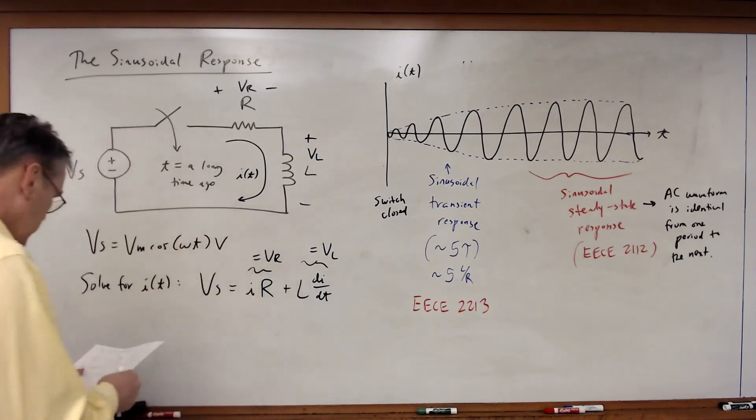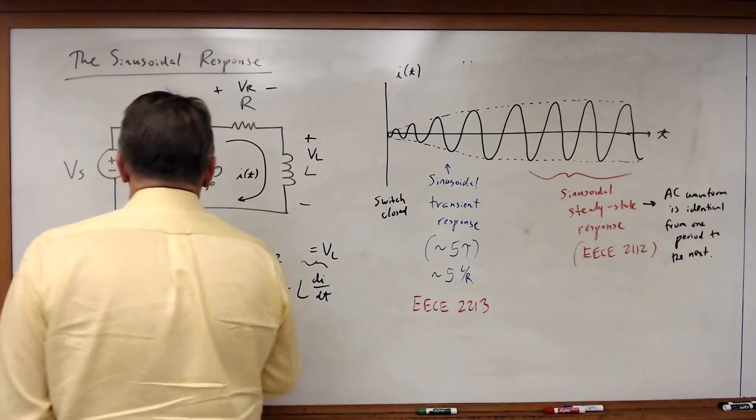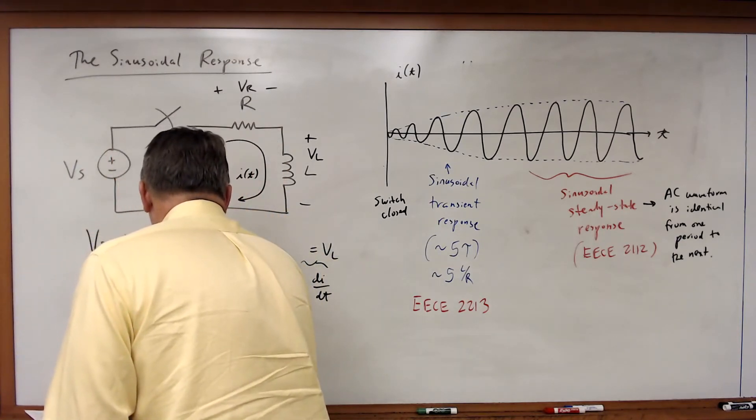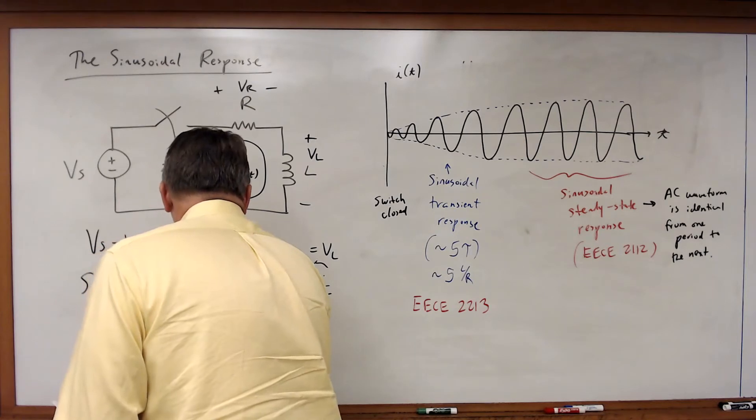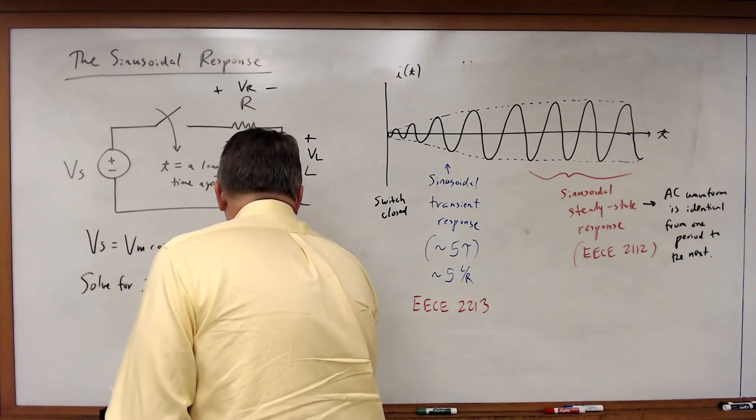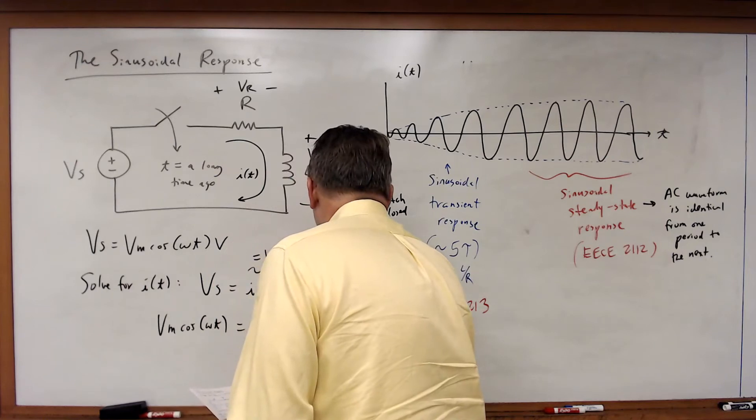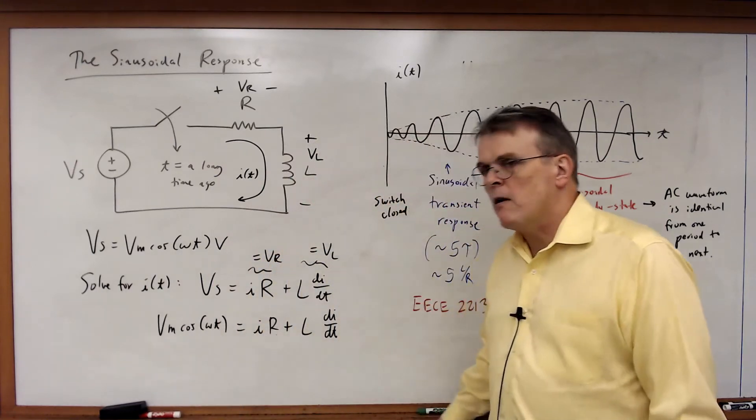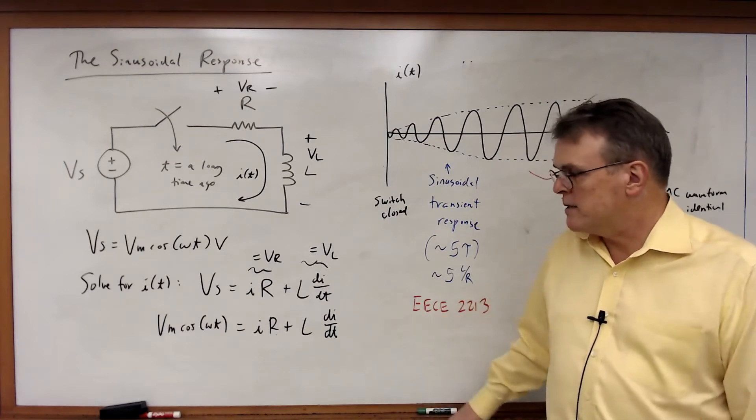So in this case, we're going to write this out, and we've got Vm times cosine omega T is equal to I times R plus L di dt. And we want to solve for I. What is I as a function of time?